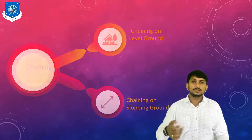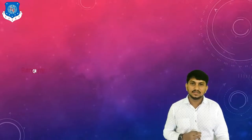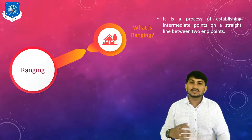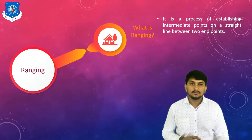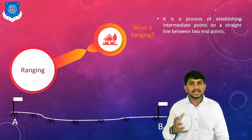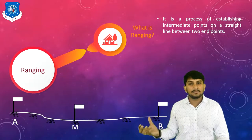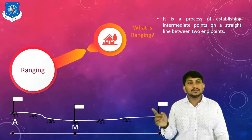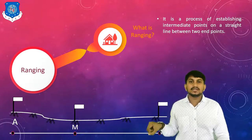We will now move to the second operation of chain survey, which is ranging. Ranging is the process of establishing intermediate points on a straight line between two endpoints. Suppose there is a survey line with two stations A and B, and we require one intermediate station M. Finding out this intermediate point exactly on the straight line between two endpoints is called ranging.